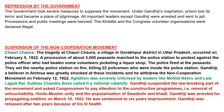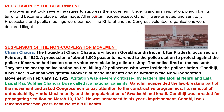The government took severe measures to suppress the movement. Under Gandhiji's inspiration, prison lost its terror and became a place of pilgrimage. All important leaders except Gandhiji were arrested and sent to jail, processions and public meetings were banned, and the Khilafat and Congress volunteer organizations were declared illegal.